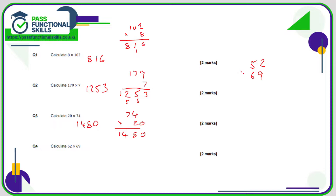52 times 69 — they're both two-digit numbers so it doesn't matter which goes on top. 9 twos are 18, 8 carry 1; 9 fives are 45 plus 1 is 46.